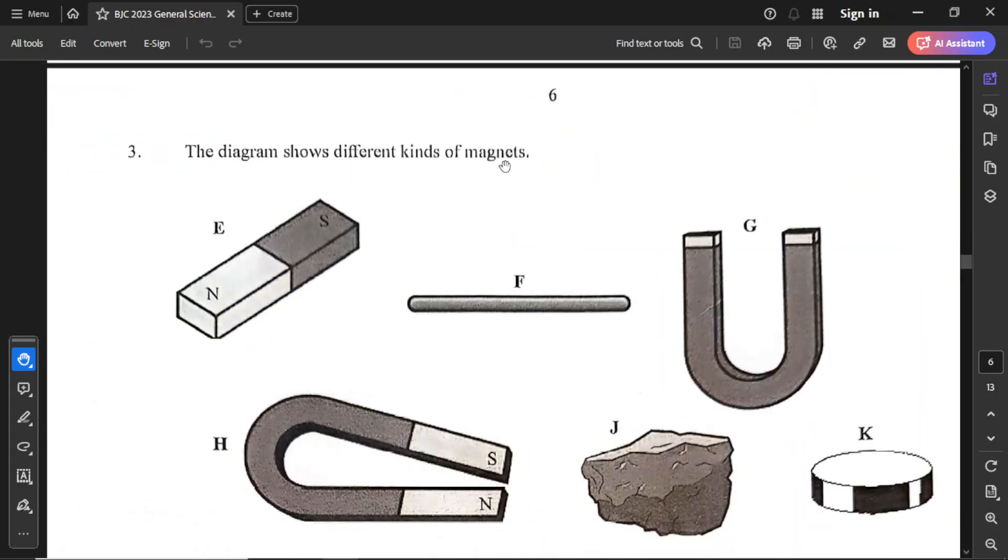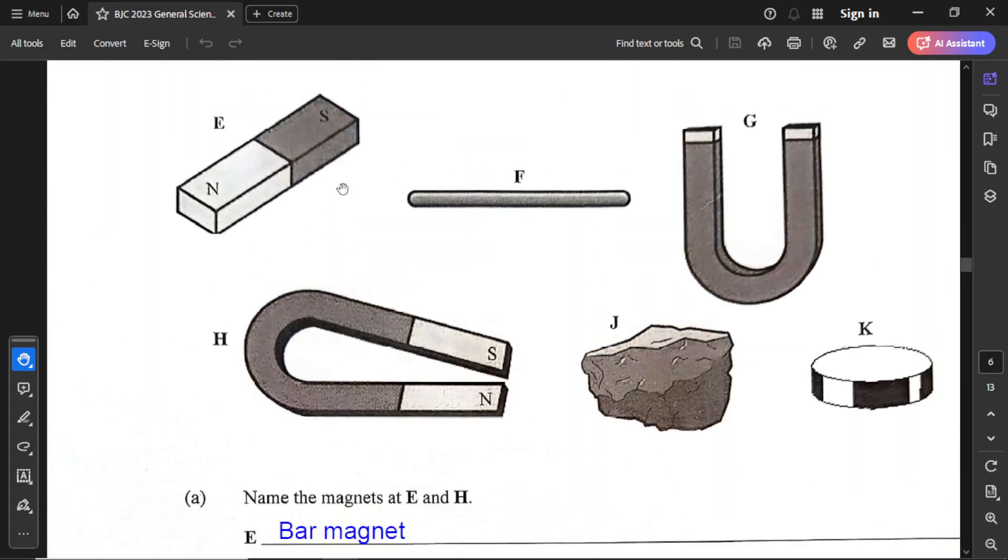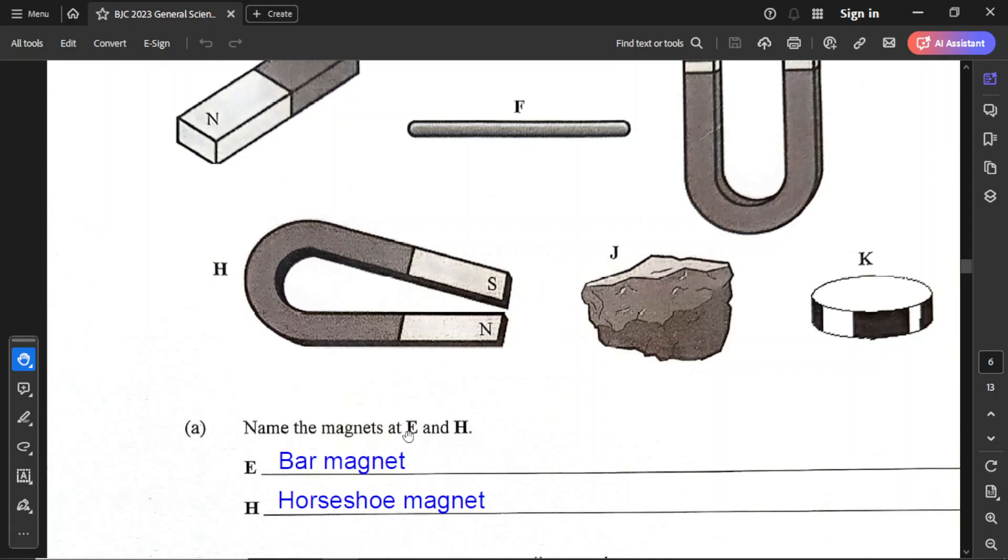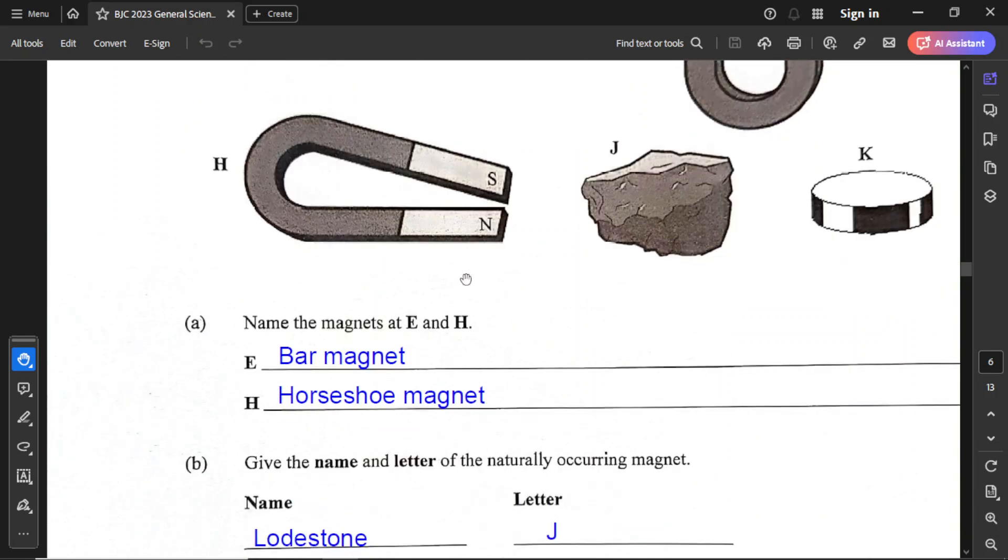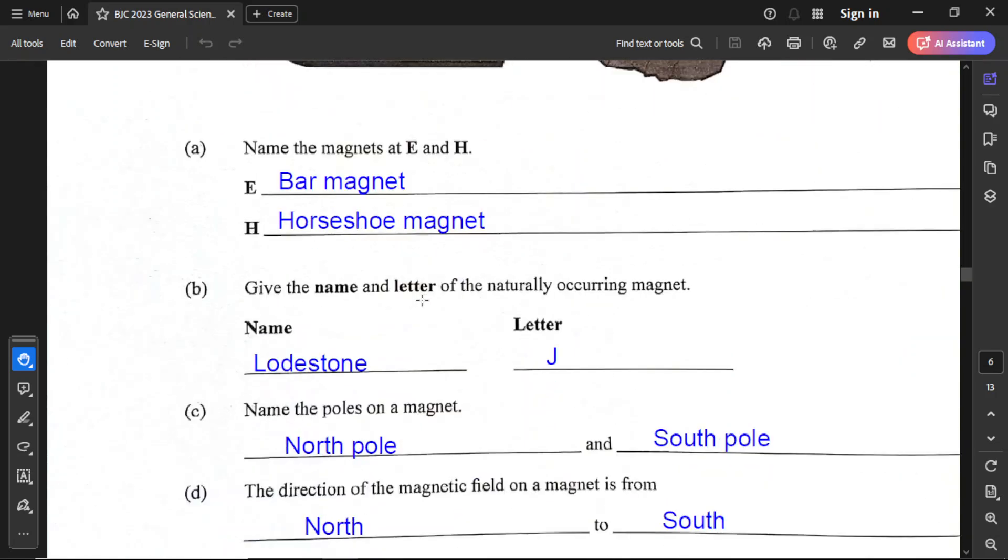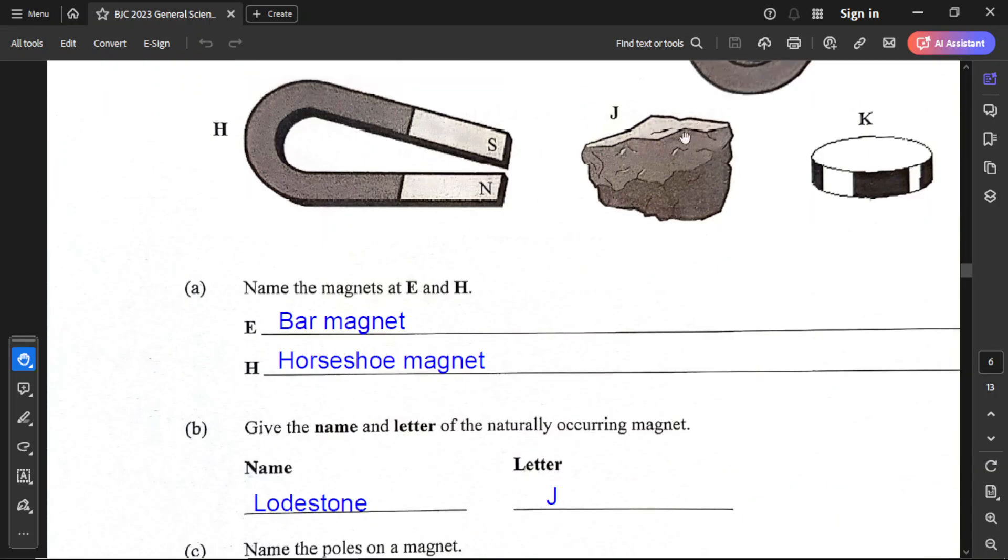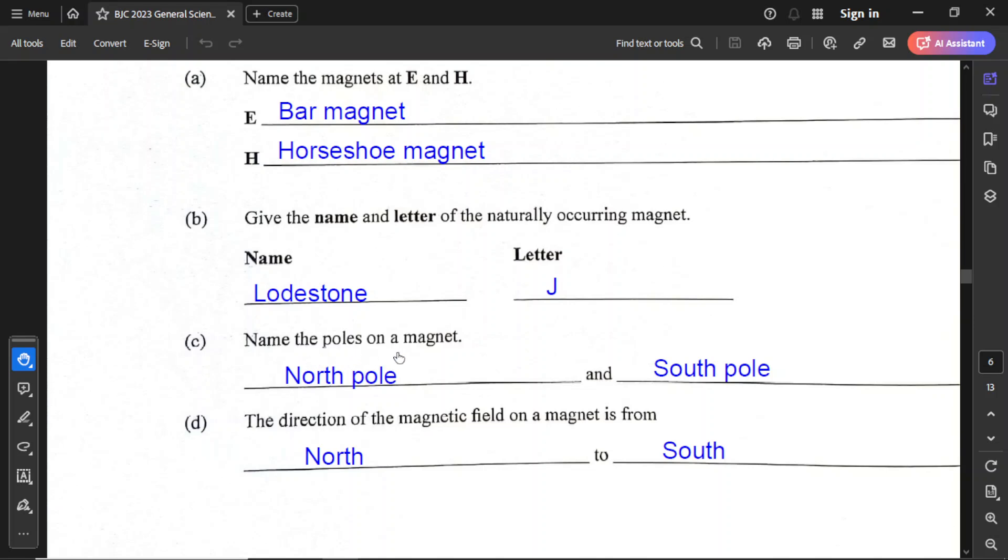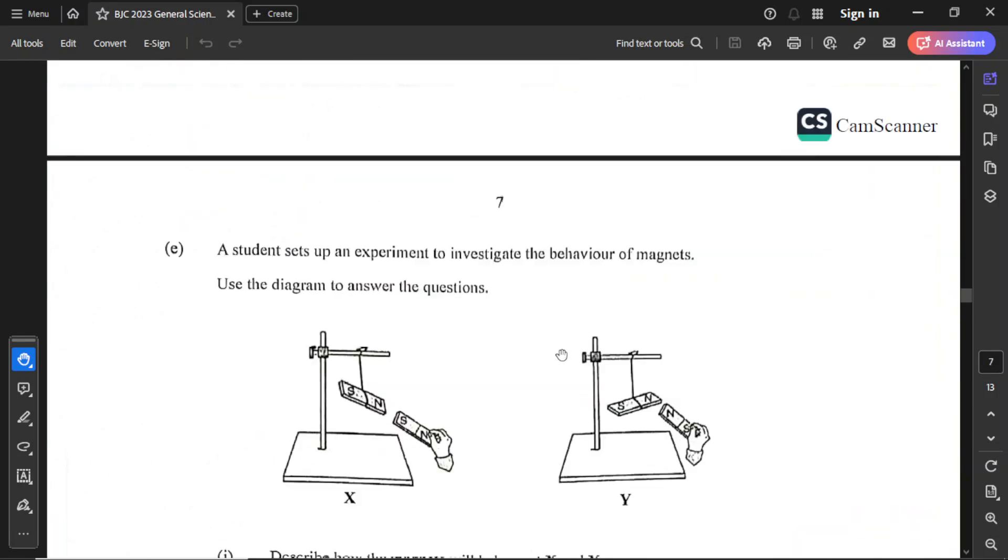For question number three, the diagram shows different kinds of magnets, and observe them quite carefully. Name the magnets E to H. E is a bar magnet, and H is a horseshoe magnet. Give the name and letter of the naturally occurring magnet, and the name is lodestone, and the letter is J. For part C, name the poles on a magnet: north and south poles. The direction of the magnetic field moves from north into south.